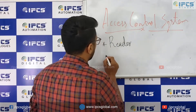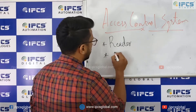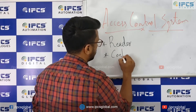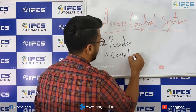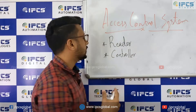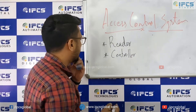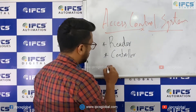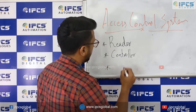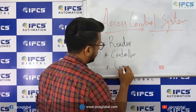So there will be a reader, there will be a controller. The reader and the controller will be connected by means of physical wires, and the third component is a lock.